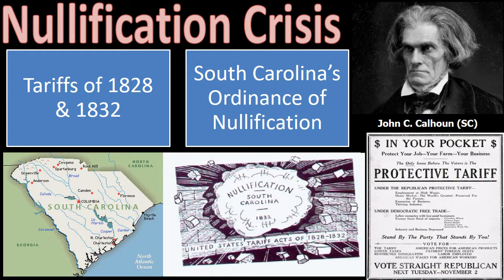The Tariff of 1828 was a protective tariff passed by Congress to protect industry in the North. It set a 38% tax on imported goods and a 45% tax on certain imported raw materials. South Carolina believed that this tariff was responsible for the state's stagnating economy. They disliked paying more for goods imported from Europe. The reduction in British goods coming to the U.S. made it difficult for the British to pay for cotton produced in southern states.